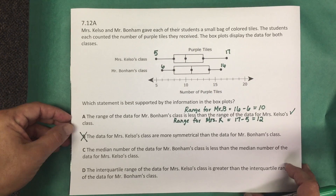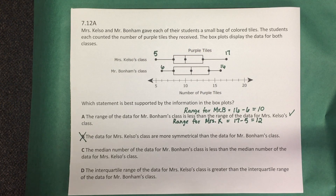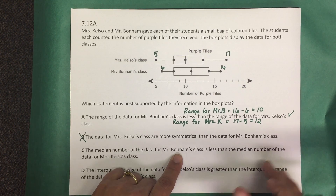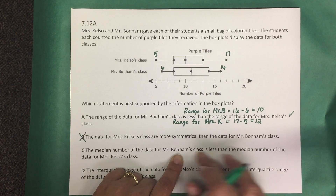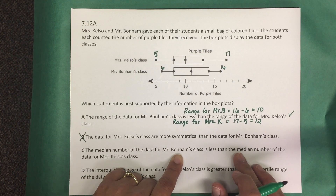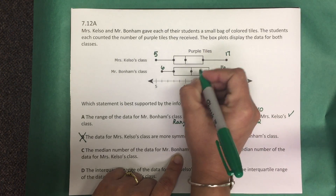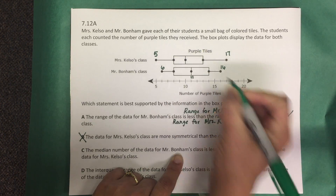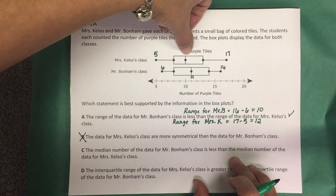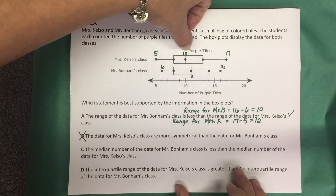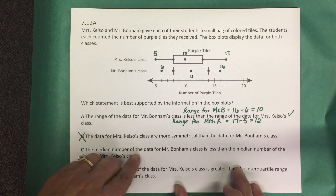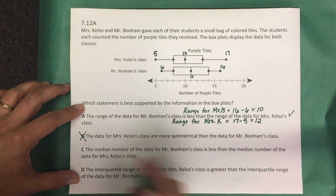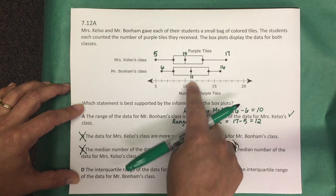Answer choice C says the median number of data for Mr. Bonham's class is less than the median for Mrs. Kelso's class. Mrs. Kelso's median has a value of 10, while Mr. Bonham's median has a value of 11. Since 11 is greater than 10, the statement that Mr. Bonham's median is less than Mrs. Kelso's is not true.